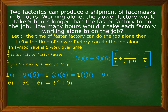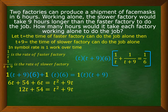Plus the second term: one times T times six gives plus six T. On the right side: T times (T plus nine) gives T squared plus 9T. Simplifying the left side: 12T plus 54 equals T squared plus 9T. Transferring 12T and 54 to the right side: zero equals T squared minus 3T minus 54. The 12T becomes negative 12T when transferred, and T squared plus 9T minus 12T gives negative 3T.